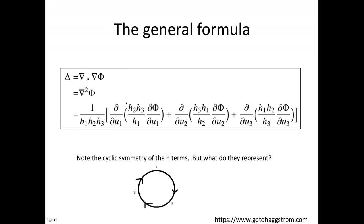We've got the partial derivatives. They go u1, u2, u3. So there's a sequence there. Inside here, we've got a cyclic symmetry.